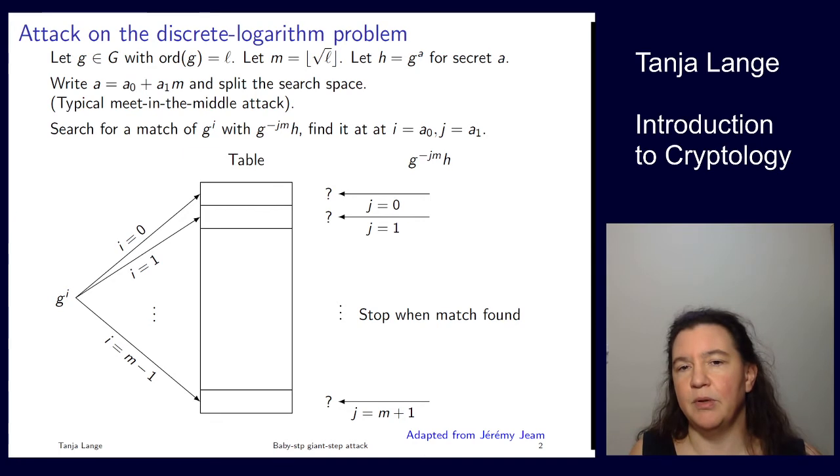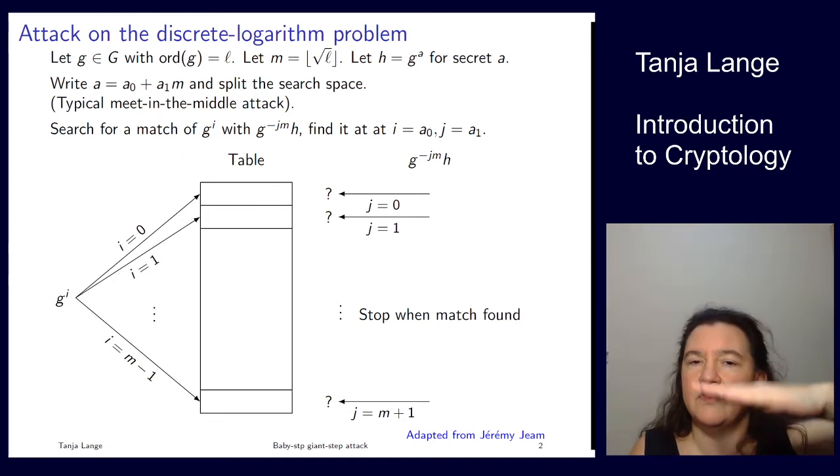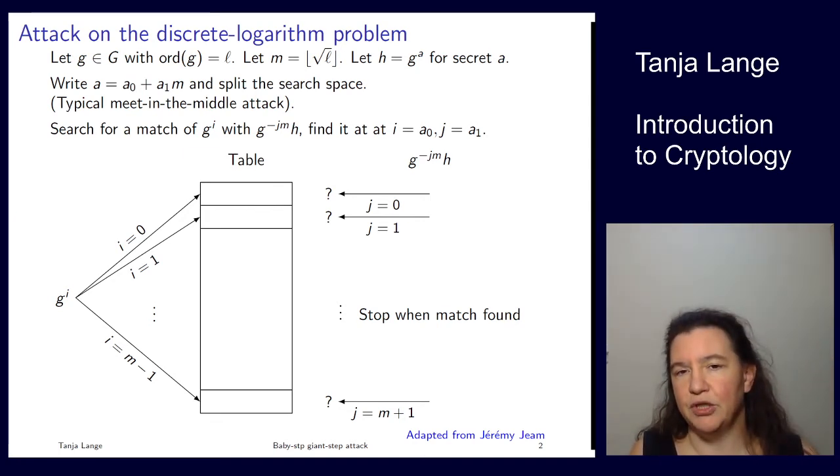j equals 1, is this element in the table? And then we go as far as we need in order to find a match. Eventually, when we reach j equals A1, that will give us a match, because we know that A is equal to A0 plus A1 M, so we know that eventually there will be a match between these two numbers.